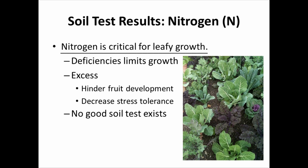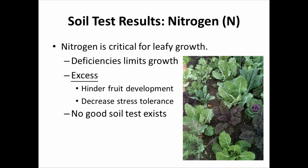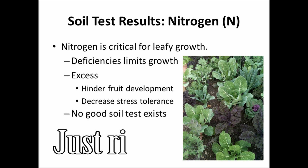Speaking of nitrogen, it is critical for leafy growth. Nitrogen deficiencies are associated with slow or limited growth. However, you can absolutely have excessive nitrogen, which promotes leafy growth over development of the fruit or vegetable. It also tends to cause a limited root system, which will decrease the plant's tolerance to drought or heat stress. Nitrogen is a Goldilocks nutrient where you need to be right in the middle — too little will cause problems and too much will also cause problems.